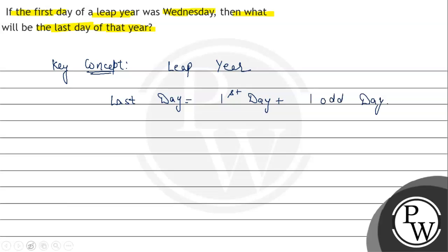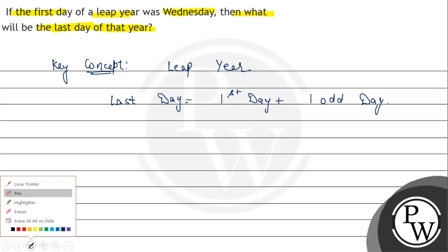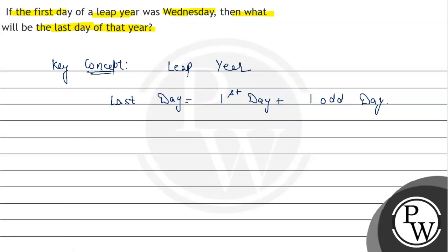Now we will use this concept to solve the equation. As given in the statement, there is a leap year. Total number of days in a leap year equals 366. And as given in the statement, the first day is Wednesday.